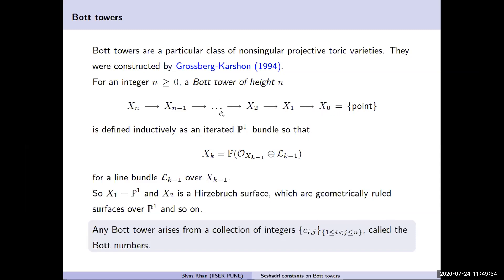It is defined inductively as an iterated P^1 bundle, so that at the kth stage it is projectivization of the trivial line bundle and the line bundle L_{k-1} from the previous step X_{k-1}. Any such Bott tower arises from a collection of n into n-1 by 2 integers c_{ij}, called Bott numbers.